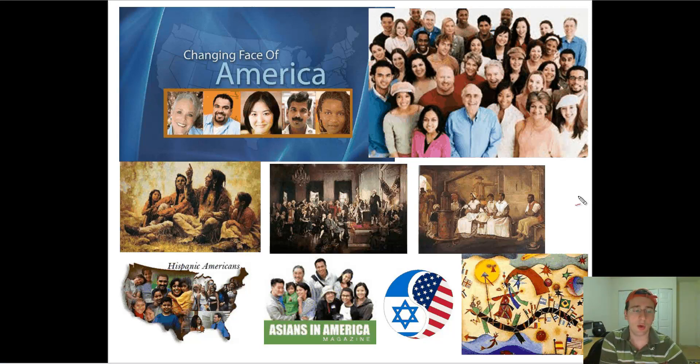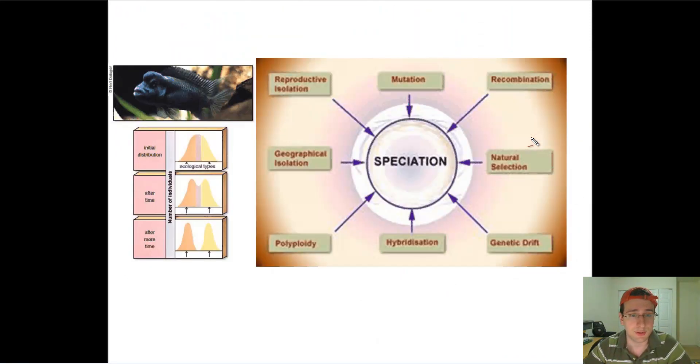Microevolution explains why populations change over time, like the American population has changed over time because of selection, migration which is gene flow, random events such as genetic drift, bottleneck effect, founder effect. All of these things explain why the American population has changed over time. We talked about this on the microevolution lecture series. We also talked about the fact then for this lecture series of speciation. Now speciation is changes that will occur from one species to the next over many, many years.